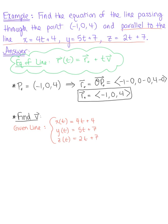So we can convert this parametric equation to its general equation form. That would be some vector r(t) that's equal to the components x(t), y(t), z(t). And we can substitute in these parametric equations. So I have 4 + 4t, 5t + 7, and then 2t + 7.